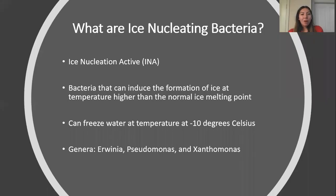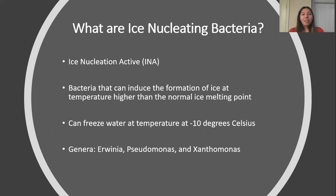So what are ice nucleating bacteria? These bacteria are said to be ice nucleation active, or INA. They are a type of bacteria that can induce the formation of ice at temperatures higher than the normal ice melting point. The ice melting point is the temperature at which water freezes. Ice nucleating bacteria can freeze water at temperatures of even negative 10 degrees Celsius.